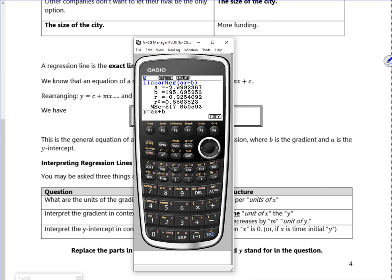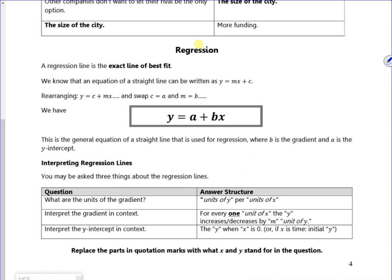In this case, because of what I pressed on the calculator, the A is the gradient and the B is the intercept, whereas they've got it the other way round here. A is the intercept and the B is the gradient.